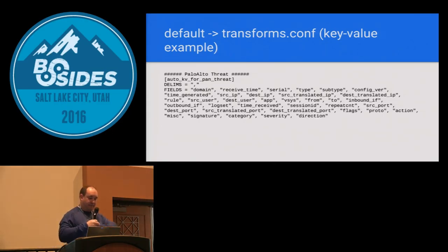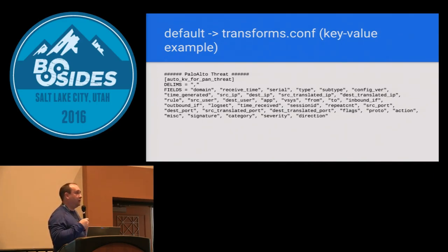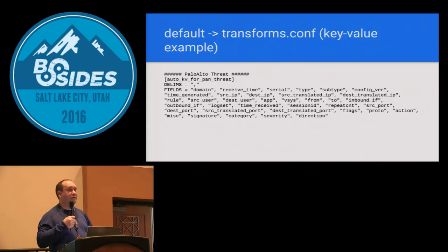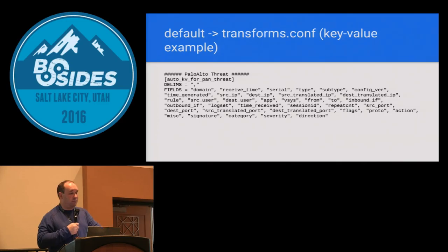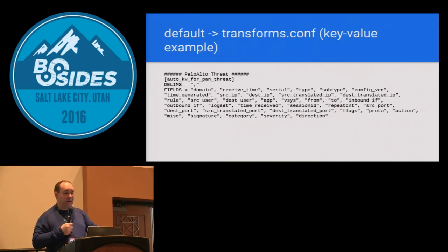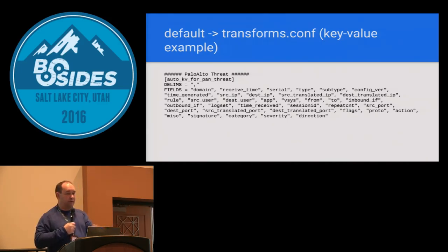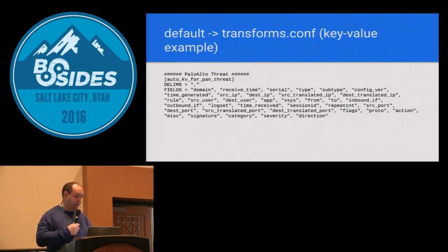Here's a different type of example — a Palo Alto. Palo Alto logs are basically just comma-separated values, which makes it really easy to bring into Splunk. Here I'm defining a key-value pair and saying my delimiter — the third line — is a comma, and then those are the fields. I don't have to do any regex. If it's a field I don't care about I might just name it something nonsensical, but I can pull it all in and those fields become available in a Palo Alto threat event.